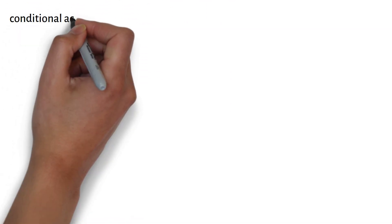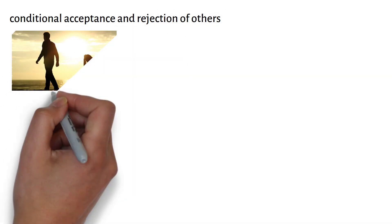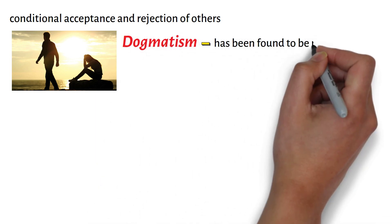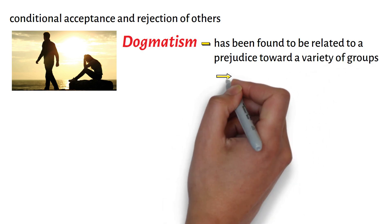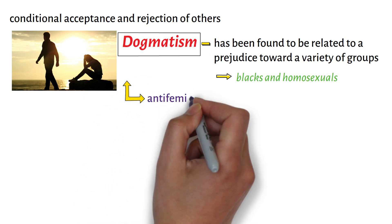Another disposition associated with dogmatism is the conditional acceptance and rejection of others based on belief content. Not surprisingly, dogmatism has been found to be related to prejudice toward a variety of groups, particularly blacks and homosexuals. Dogmatism is also linked with anti-feminist sentiments.